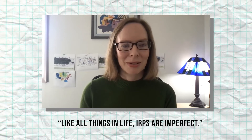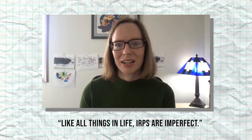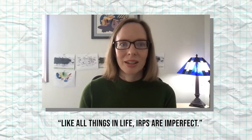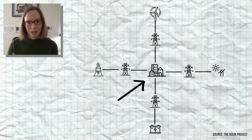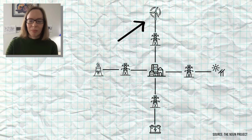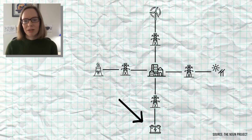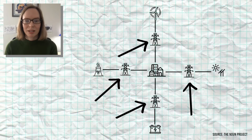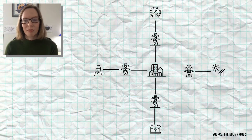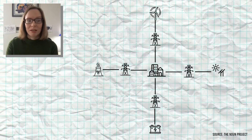The reality is that, like all things in life, IRPs are imperfect — there are things they can and cannot tell us. I created this visualization to illustrate that. It's a simplified schematic of an electric power system: a city in the center being served by power plants around it — wind, solar, nuclear, battery storage — with power transmitted across transmission lines. A lot of folks think this is what an IRP simulates, but it doesn't. Instead, IRPs simplify the problem down to an analysis of power plants and demand.